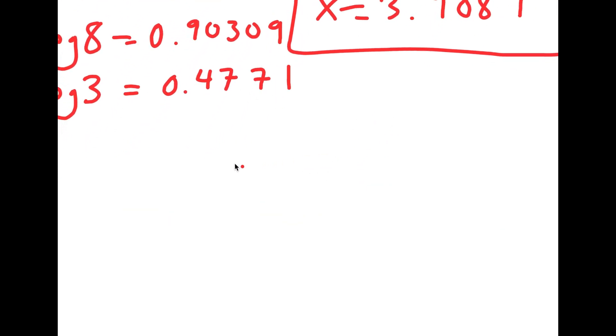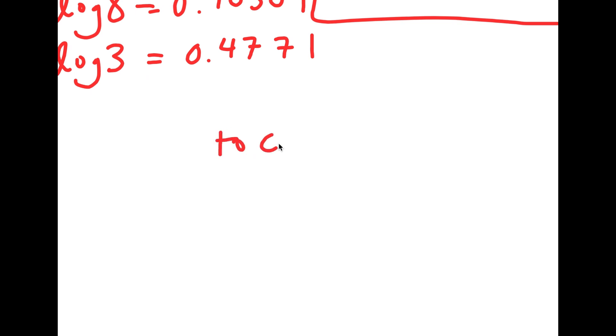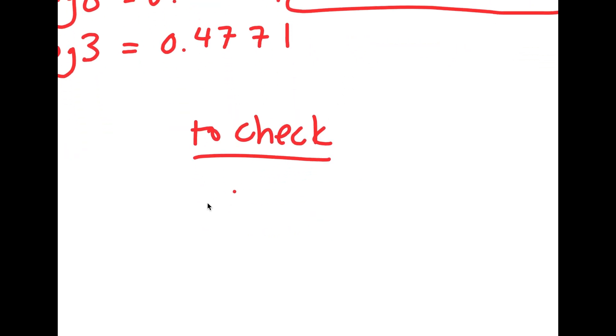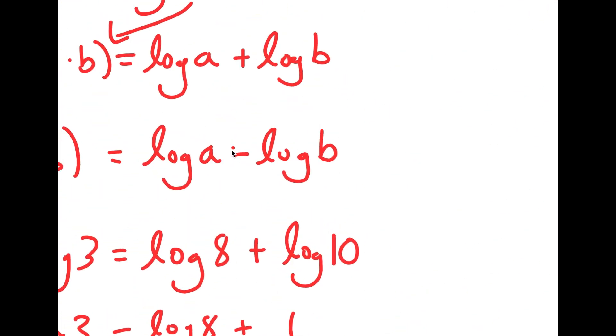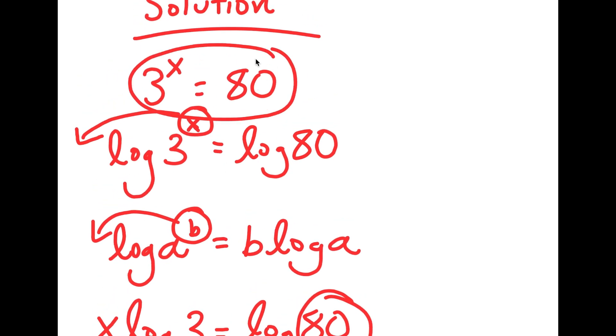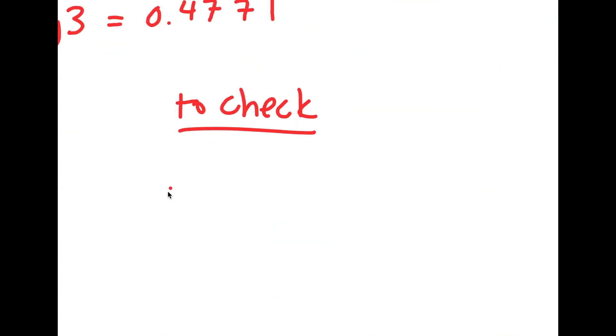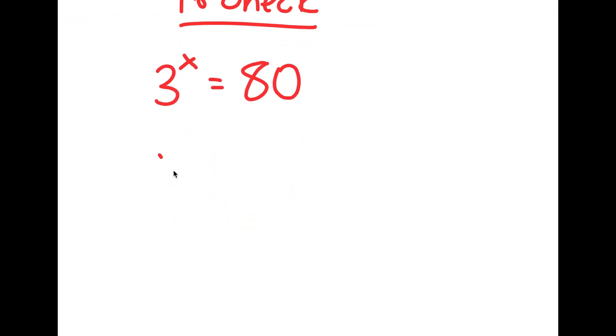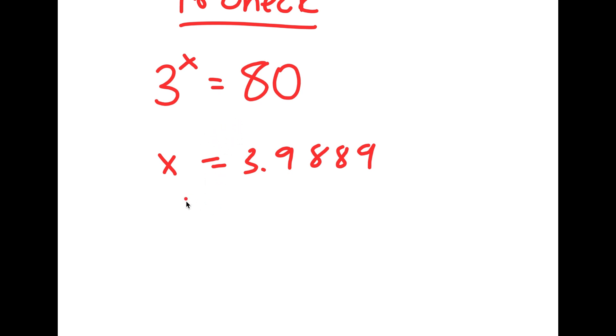Now, the only thing left to do is to check if my solution here is correct. So the original equation was 3 to the power of x is equal to 80, and my solution is x is equal to 3.9889. So if I plug this in for x into my original equation, I get 3 to the power of 3.9889 is equal to 80.